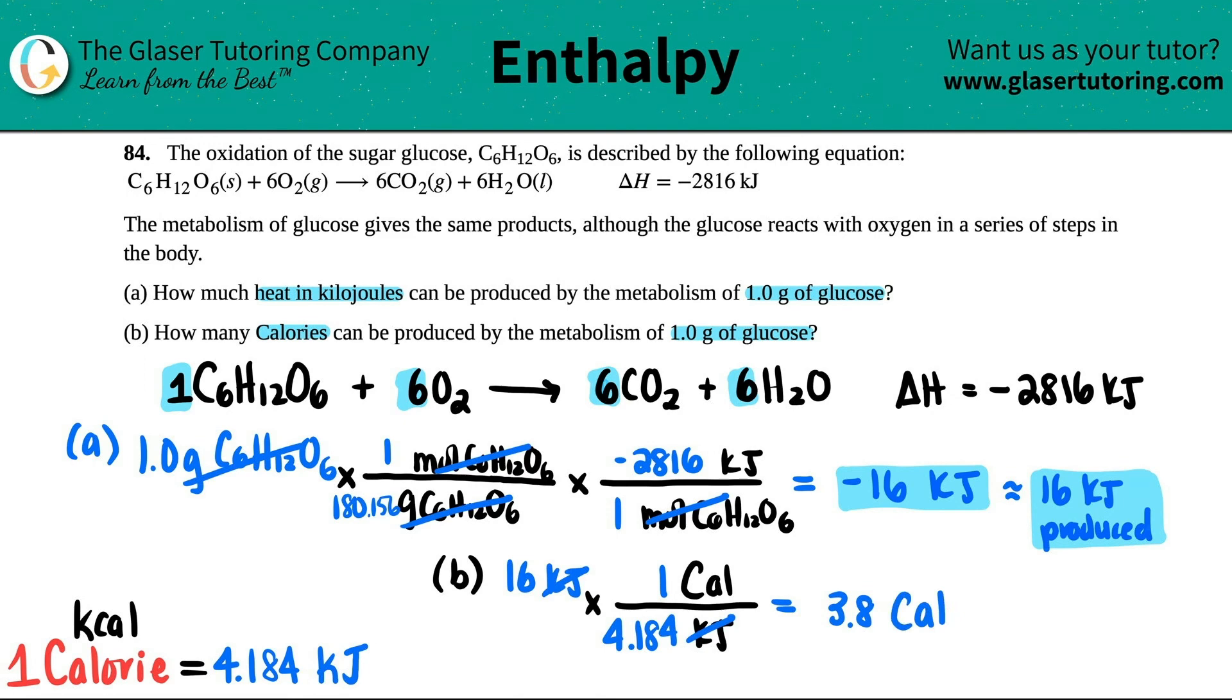So if you metabolize, if you ingest one gram of glucose and it gets metabolized, you're going to be able to produce roughly three calories for heat energy.